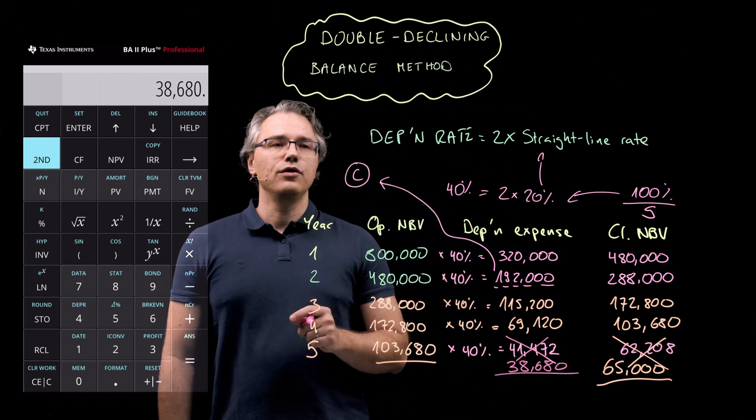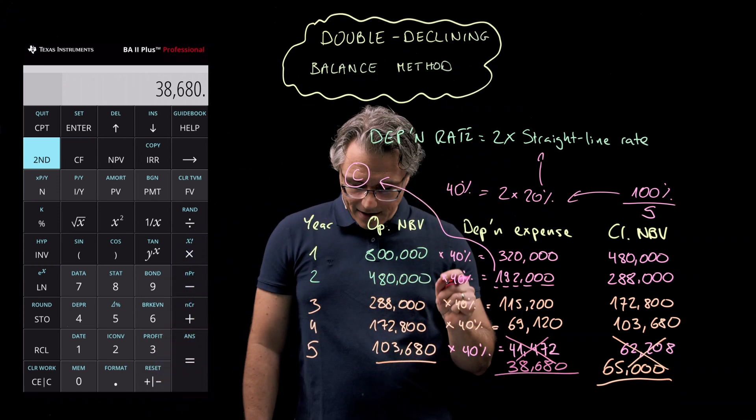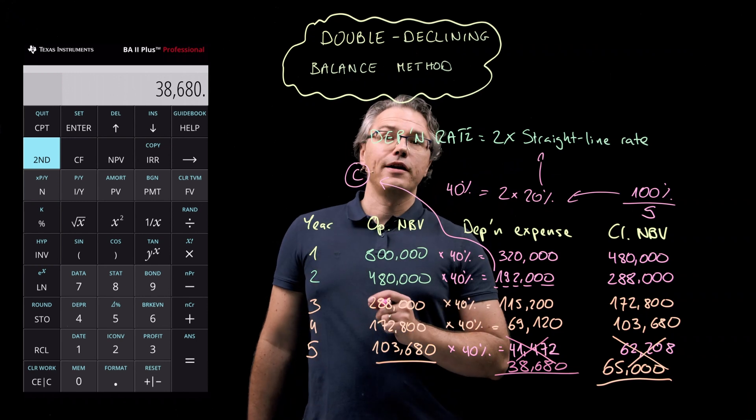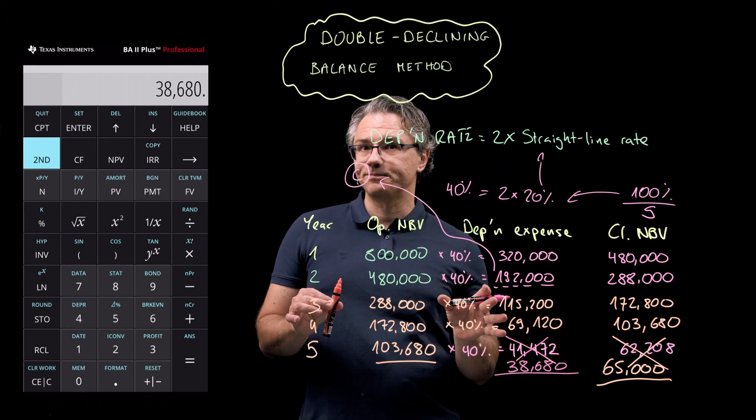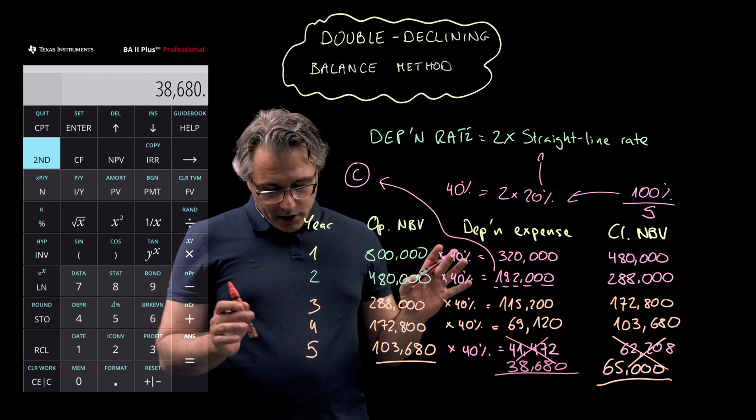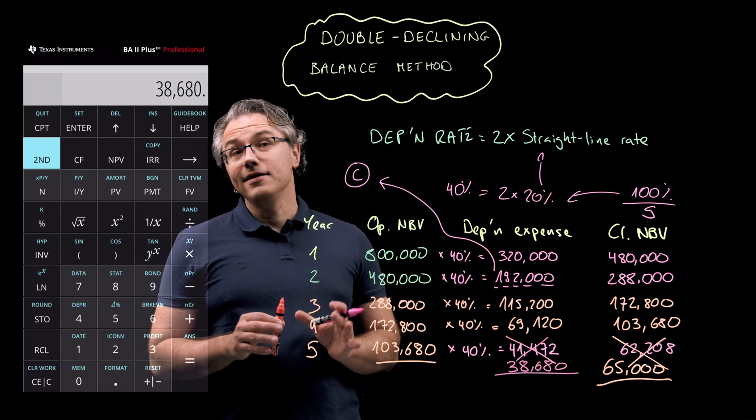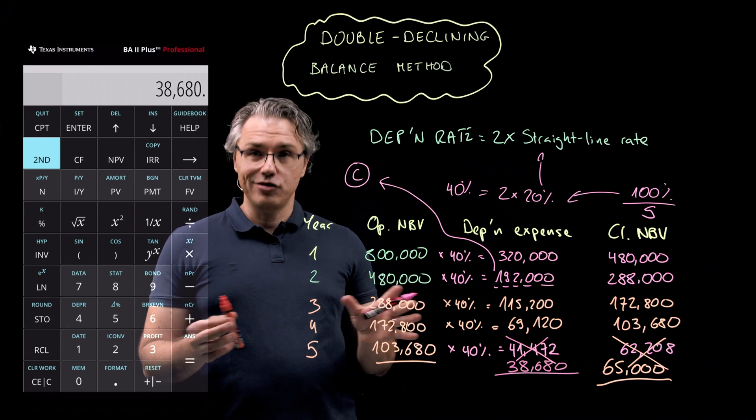And as far as I can see, this produces a year five depreciation expense of something completely different to this. It's actually the missing figure 38,680. And this would be your depreciation expense in the final year of the asset's operation, if you are ever asked about this. So please just be aware of the need to take this little trick into account just in case.